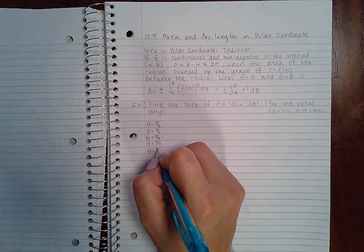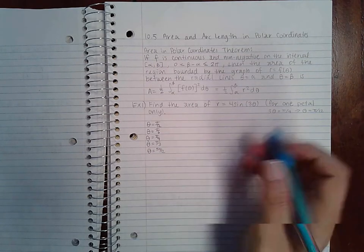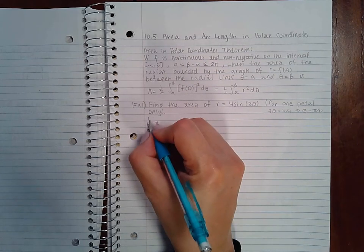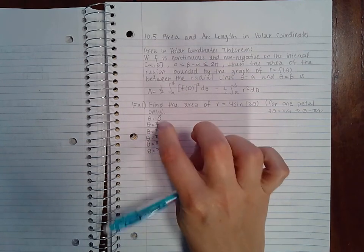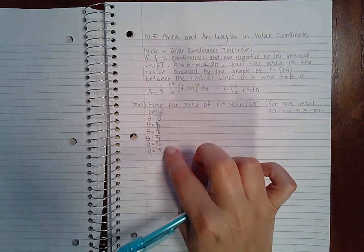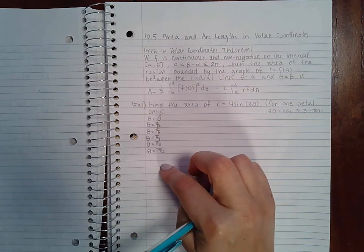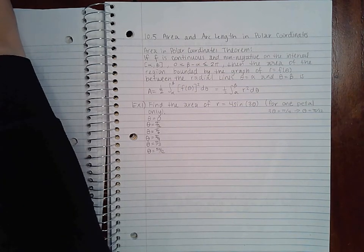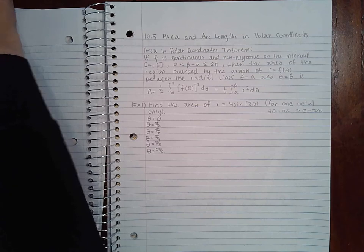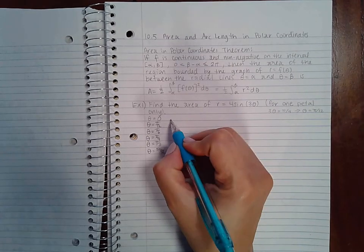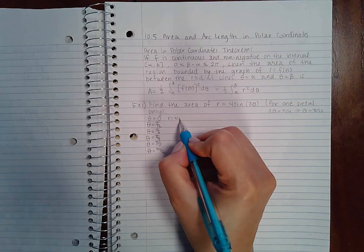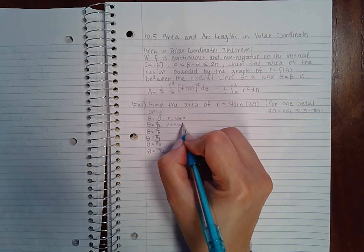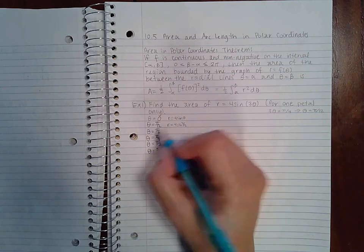We'll see how far we have to go. What we want to see is whatever value we get for the first θ - oh we forgot θ = 0 - whatever we get for the first value we want to see where it gets to that same value. If I plug these in here, r would be 4 sin(0), r would be 4 sin(π/12) because 3 times π/12